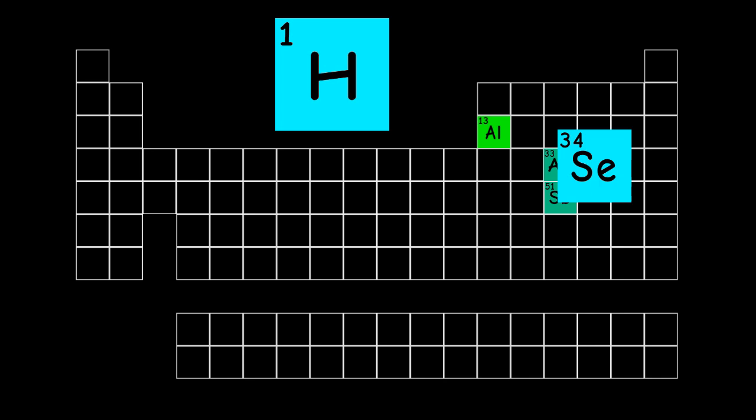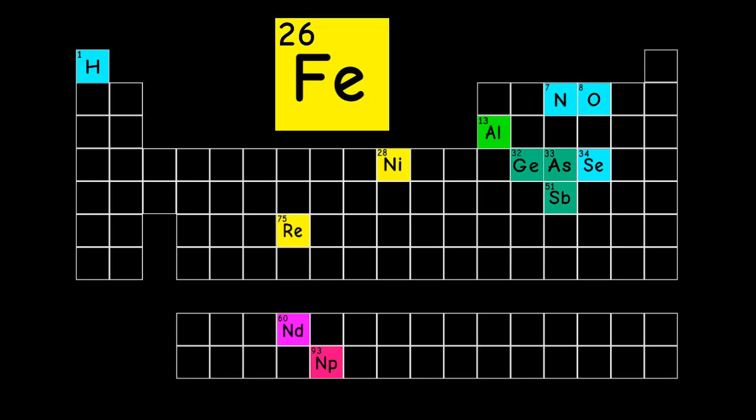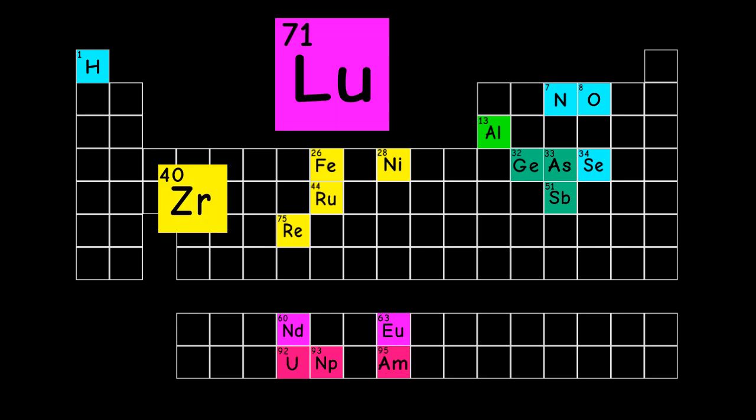There's antimony, arsenic, aluminum, selenium, and hydrogen, and oxygen, and nitrogen, and rhenium, and nickel, neodymium, neptunium, germanium, and iron, americium, ruthenium, uranium, europium, zirconium, lutetium,